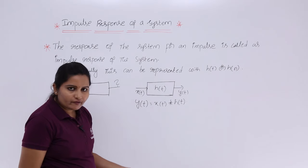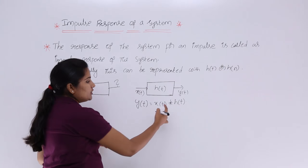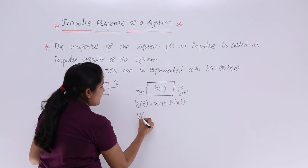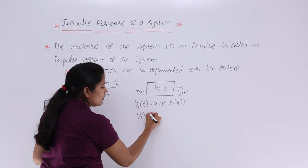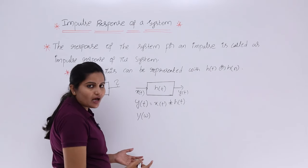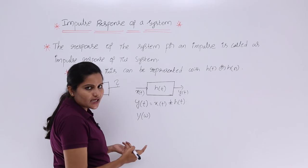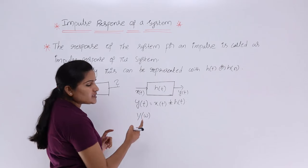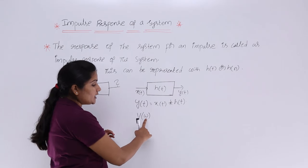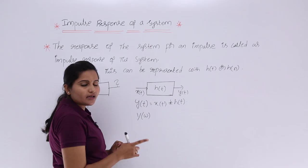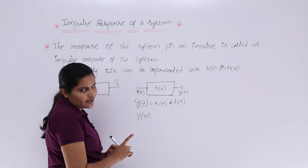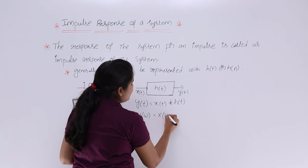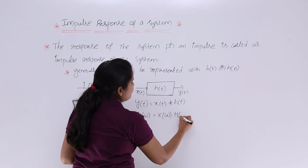If you want to write this in the frequency domain, convolution becomes multiplication. That means H(ω) or H(s) — using Fourier transform or Laplace transform respectively. I am considering Fourier transform here, which is why I write ω. If you use Laplace transform, you write s. So y(ω) is equivalent to X(ω) multiplied by H(ω).